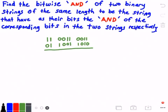Hey guys, welcome to this video on the bitwise AND operation. So here we want to find the bitwise AND of two binary strings of the same length to be the string that have as their bits the AND of the corresponding bits in the two strings respectively.